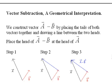All right, here's subtraction. We construct the vector a minus b by placing the tails of both vectors together and drawing a line between the two heads. So this is going to be our a minus b. And you put the head of a minus b at the head of a and the tail of a minus b at the head of b. And you get this blue vector here, which is called a minus b.